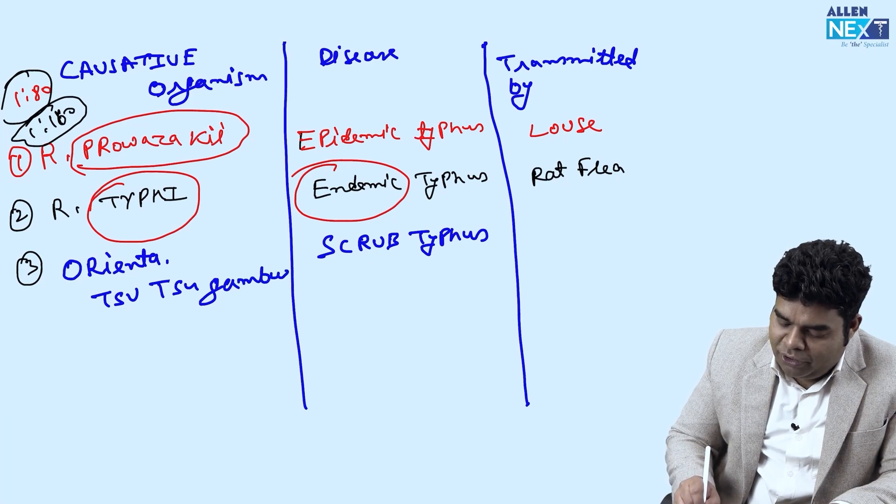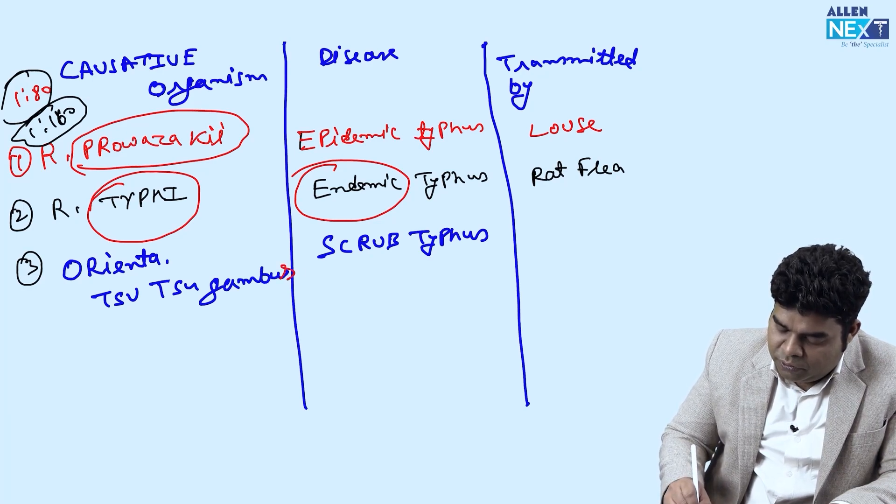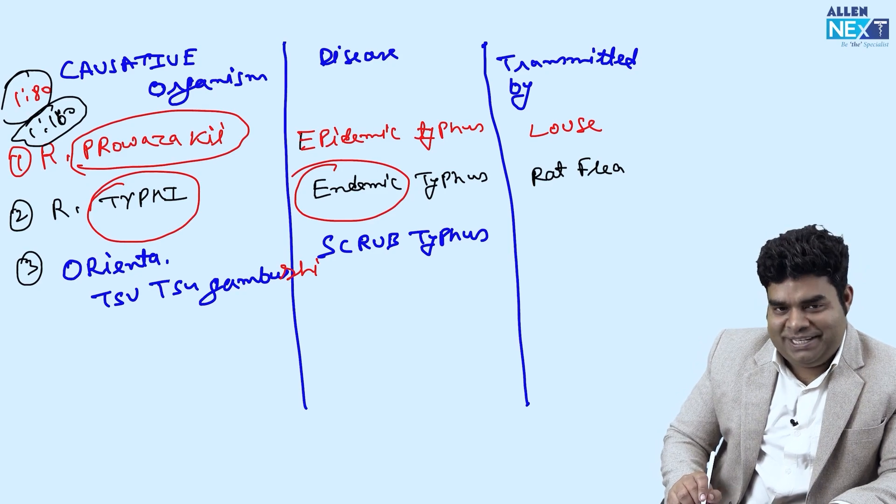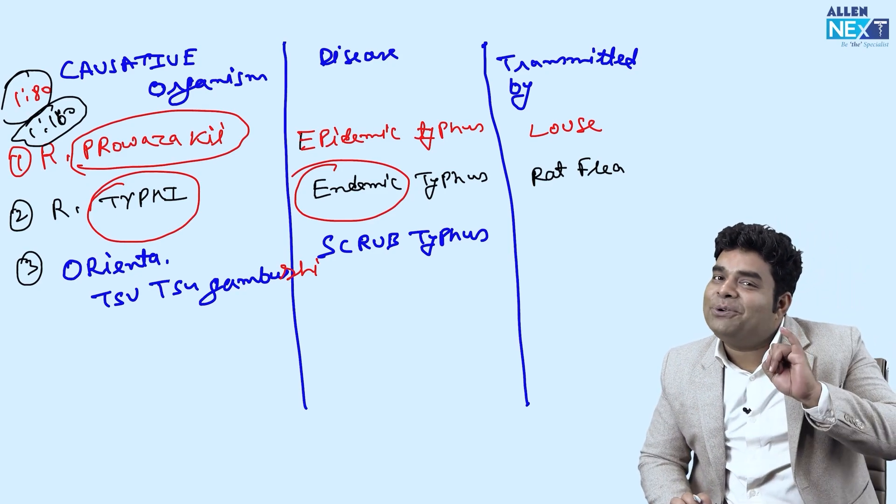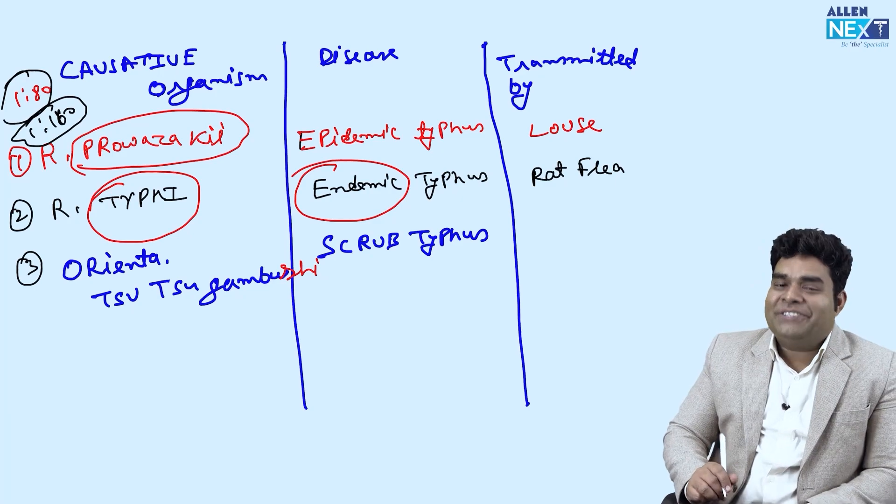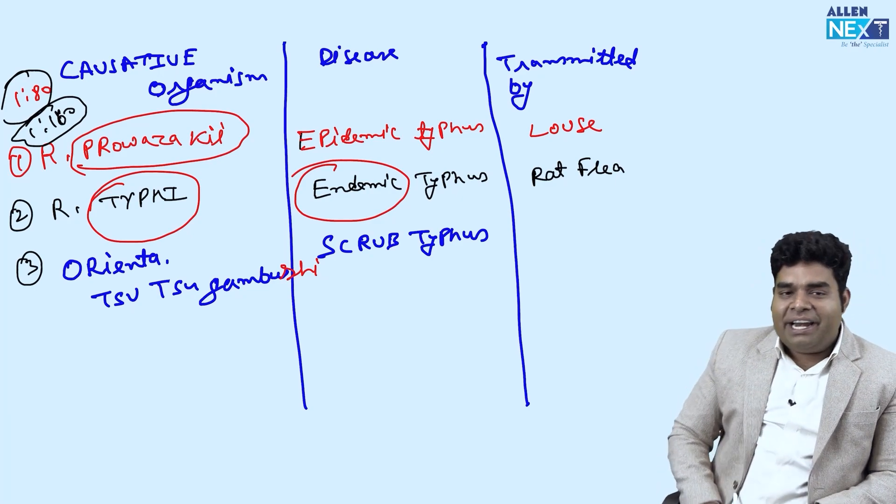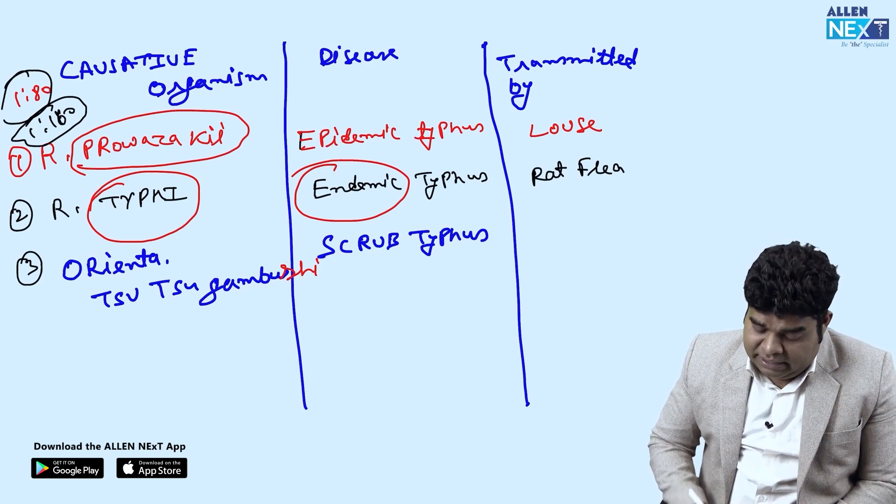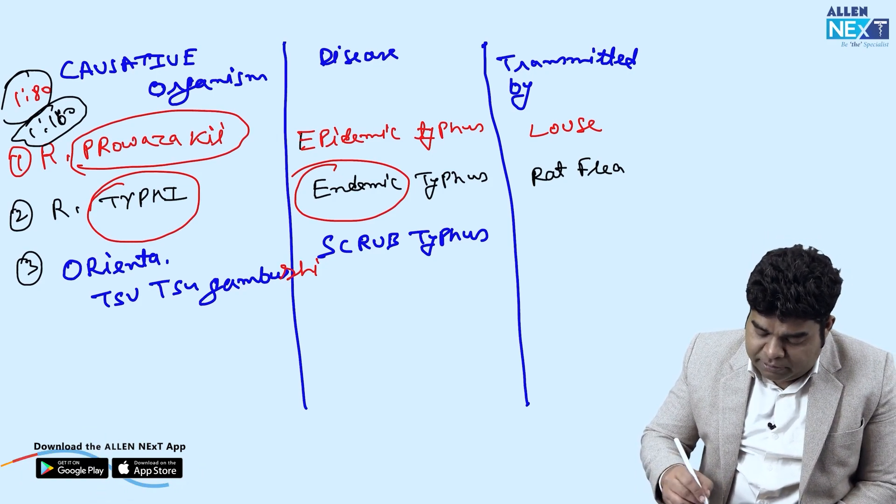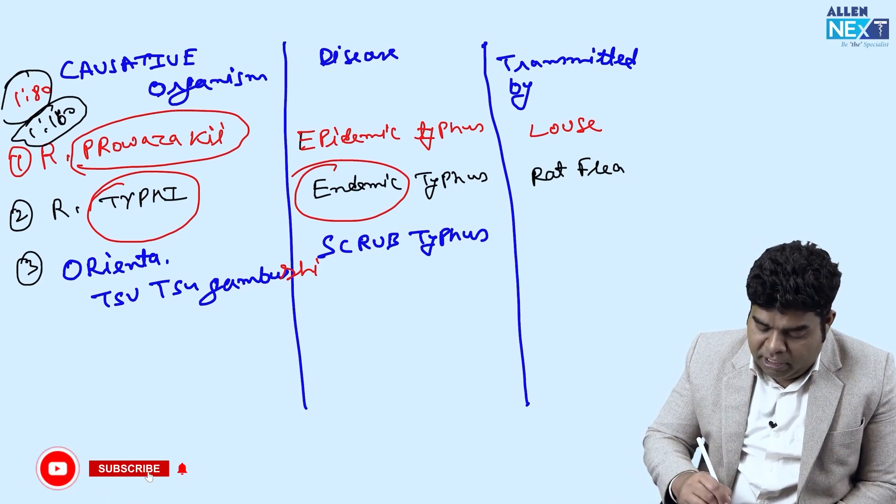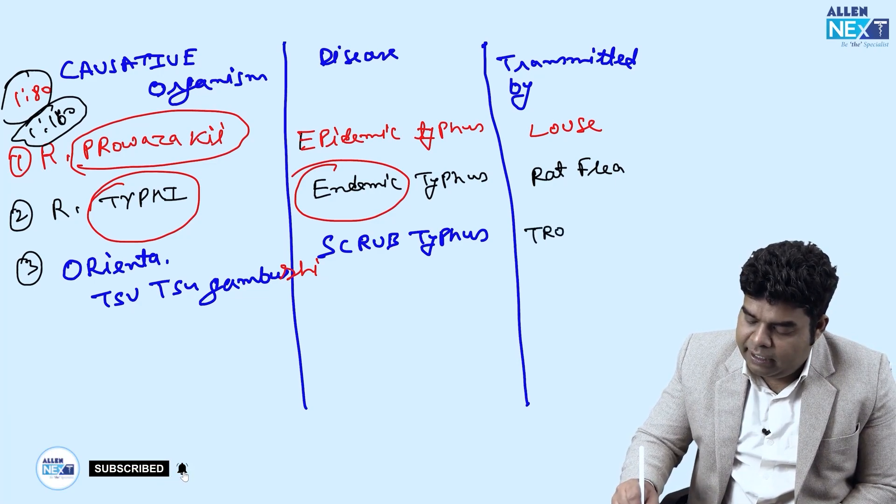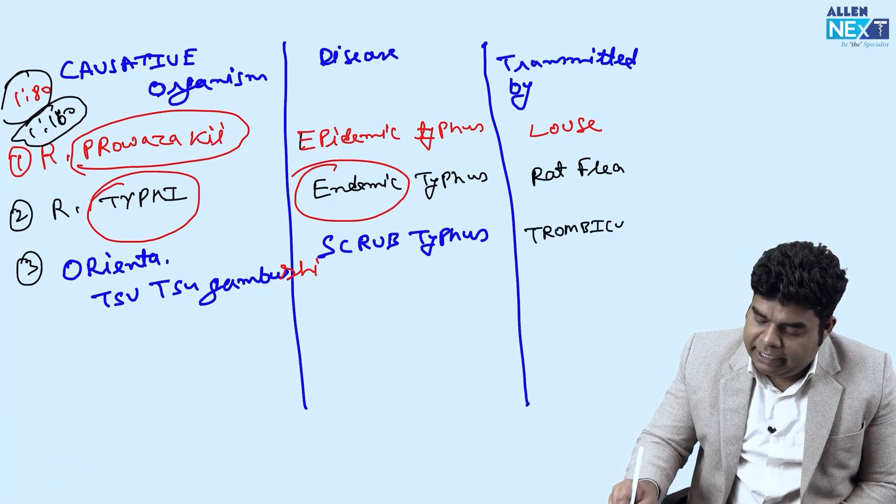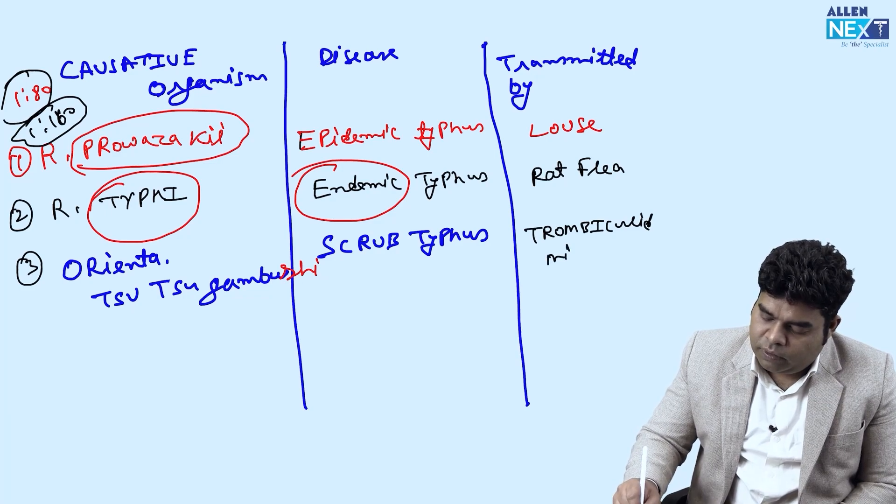Or you can also call it as tsutsugamushi. So, Orienta tsutsugamushi cause scrub typhus is the disease and it is transmitted by not a normal mite but a special type of mite, trombiculid mite.